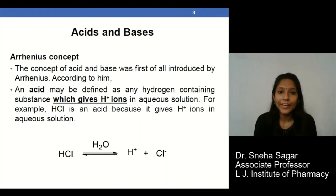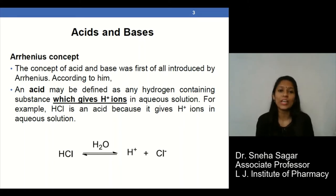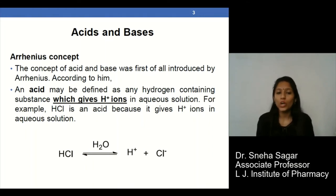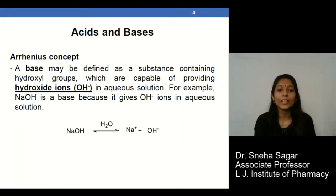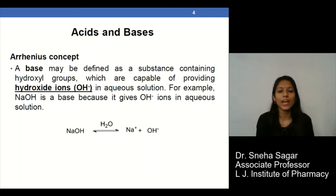Now we have the Arrhenius concept for acids and bases. According to Arrhenius, an acid is defined as any hydrogen-containing substance which gives H⁺ ions in aqueous solution — for example, HCl can liberate H⁺ ions in aqueous solution. A base is defined as any chemical which can liberate OH⁻ ions in the presence of aqueous solution, such as any hydroxide liberating OH⁻ ions with water.